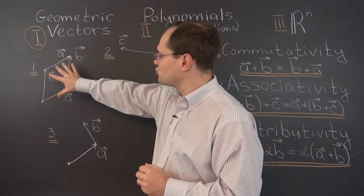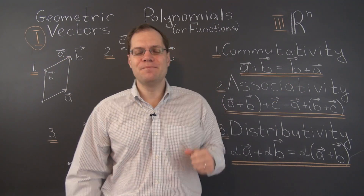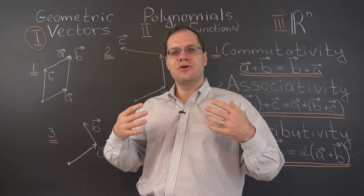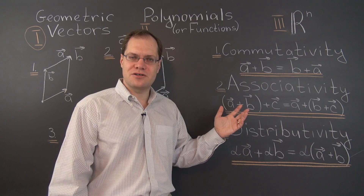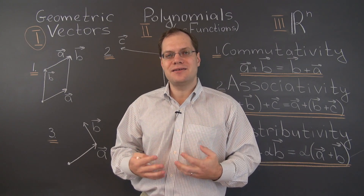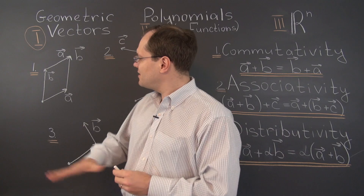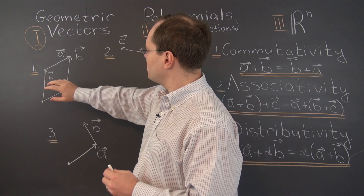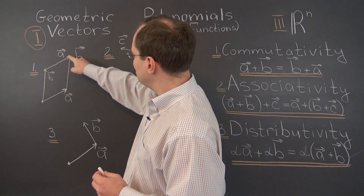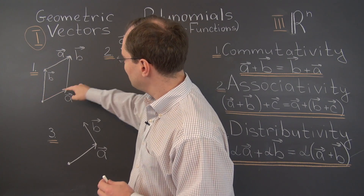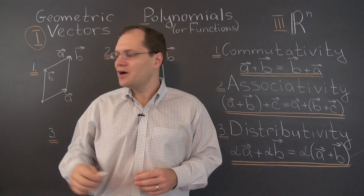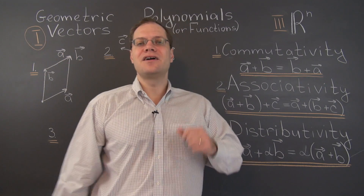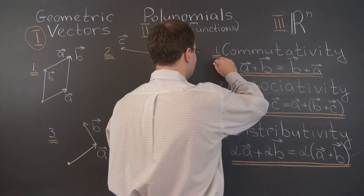Does this constitute a proof of this property? Not really, but it's not the proof we're after in this video. We just want to interpret these rules geometrically and make sure that, at least on an intuitive basis, they hold. We see a perfect parallelogram, so of course you end up at the same point. A plus B equals B plus A — commutativity is confirmed.